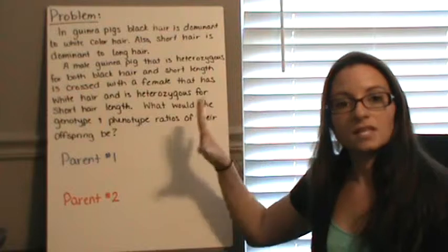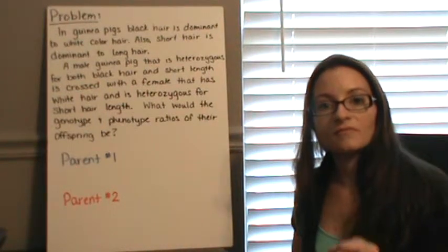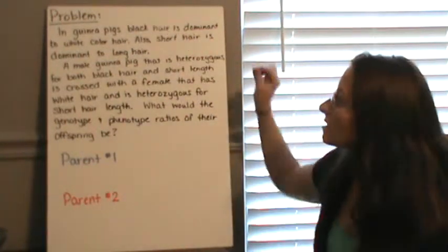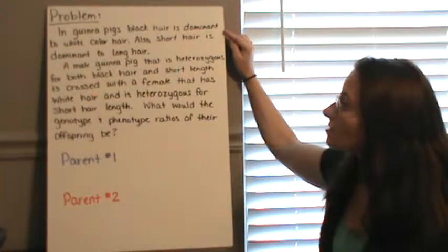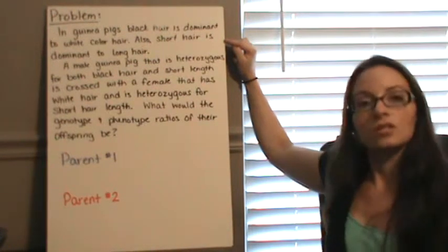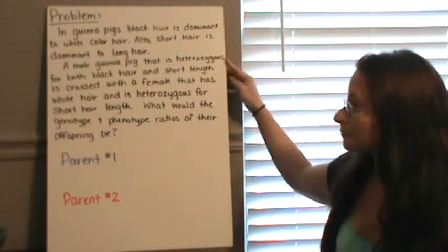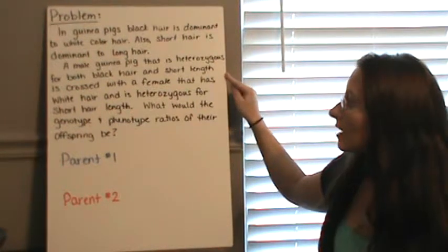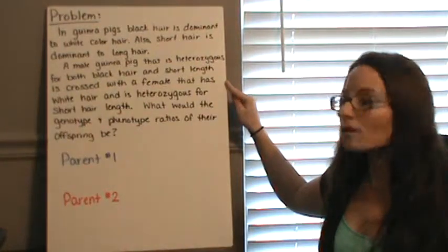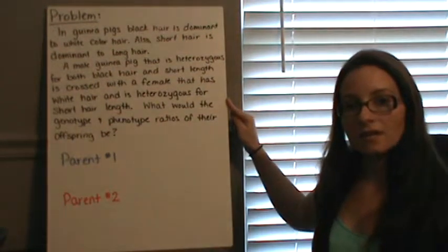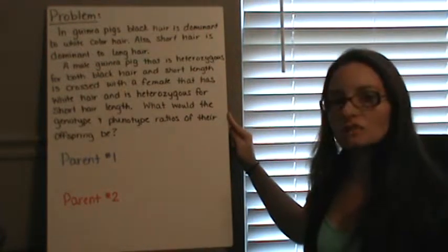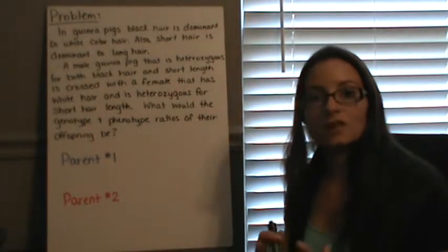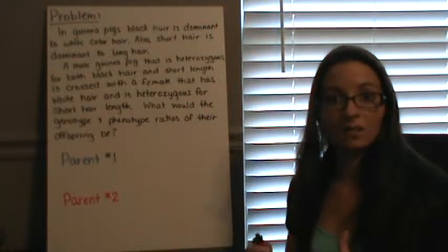The first thing you need to do is read the problem. Figure out exactly what it is it's saying, and then go from there. The problem reads: in guinea pigs, black hair is dominant to white hair color. Also, short hair is dominant to long hair. A male guinea pig that is heterozygous for both black hair and short length is crossed with a female that has white hair and is heterozygous for short length. What would the genotype and phenotype ratios of their offspring be? The first thing you have to do is figure out the genotypes of the parents before we can even look at crossing them.